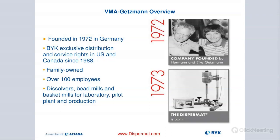The company is still family-owned. They have over 100 employees worldwide. They are known for making really high-quality dissolvers, bead mills, and basket mills for lab and manufacturing environments. They also have the Dispermat trademark that you've probably heard before — so they own that name as well.